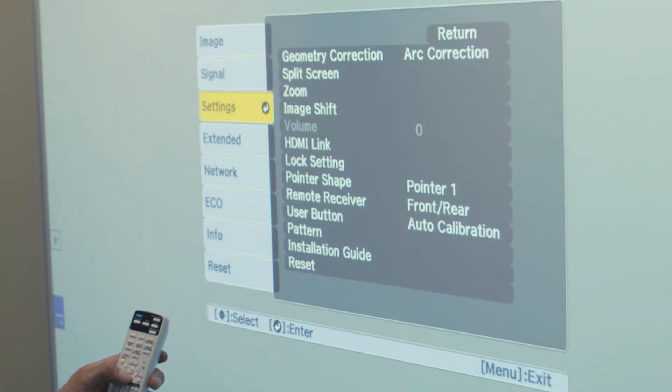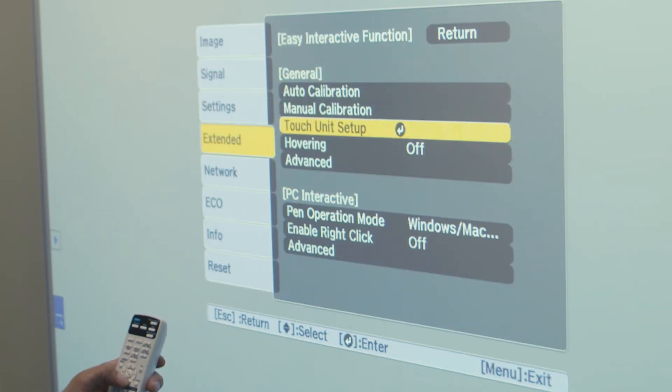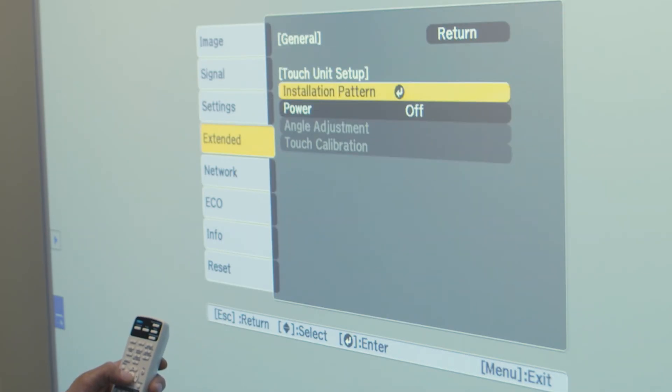Using the control remote from the projector, go into Settings, Extended, then into Easy Interactive Function, selecting Touch Unit Setup.